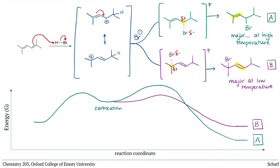To summarize our situation, the more stable alkene product is formed via the higher energy transition state, and the less stable product is formed via the lower energy transition state.